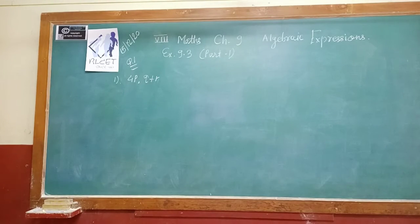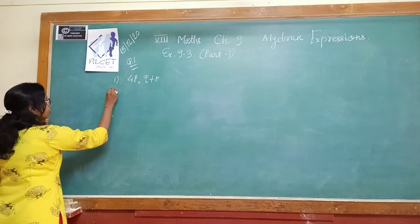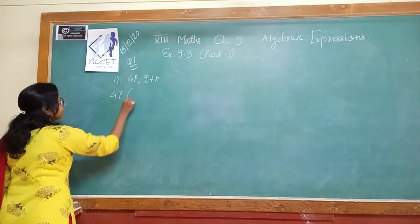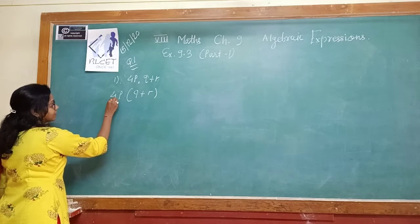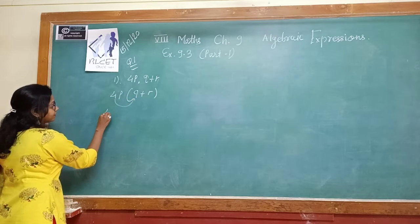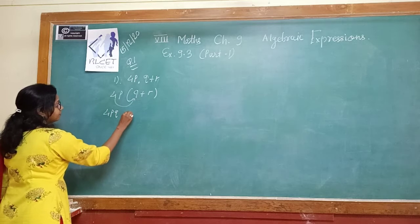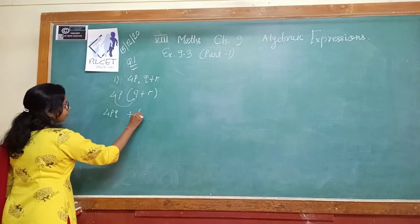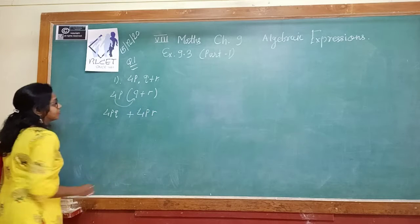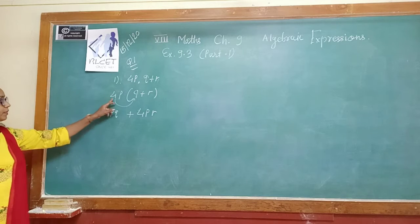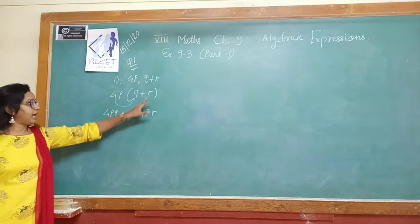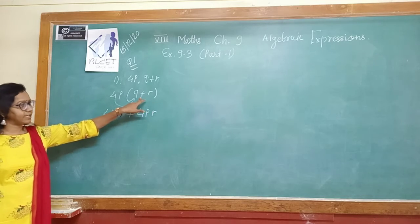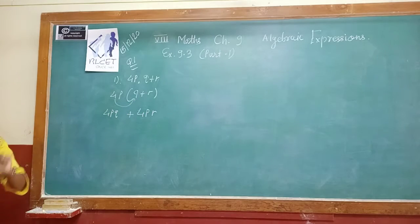Let's see how to do the multiplication. So 4p multiplied with (q + r) — keep the binomial in brackets. The first term 4p multiplies with q to give 4pq, then 4p multiplies with r to give 4pr. The addition sign stays in the middle, giving us 4pq + 4pr. That is our answer for the first question.